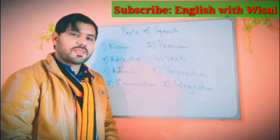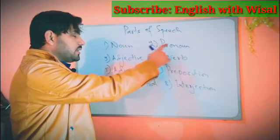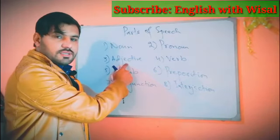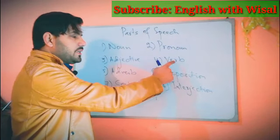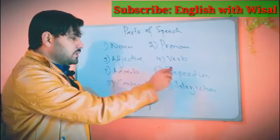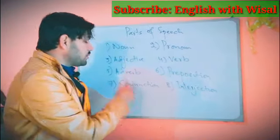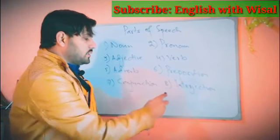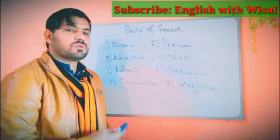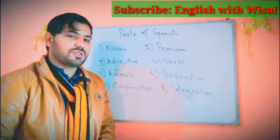The first one is noun, the second one is pronoun, the third one is adjective, the fourth one is verb, the fifth one is adverb, the sixth one is preposition, the seventh one is conjunction, and last but not least, the eighth one is interjection. So this was all about parts of speech. I hope you got it, and thank you so much for watching this video.